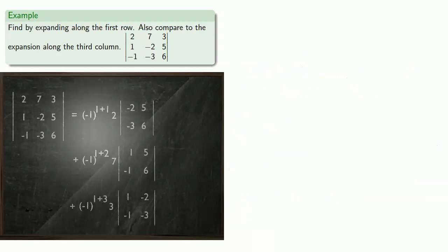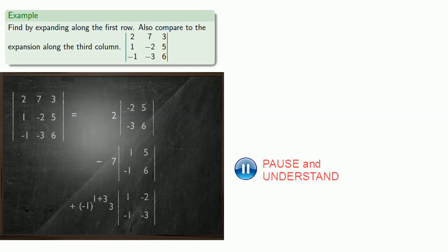And we can evaluate these powers. Negative 1 to the power 1 plus 1. Well, since that's an even power, that quantity is just going to be 1. Negative 1 to the power 1 plus 2. That's an odd power, so that means we'll subtract the second term. Negative 1 to the power 1 plus 3. That's an even power, so it's the same as just adding this term.